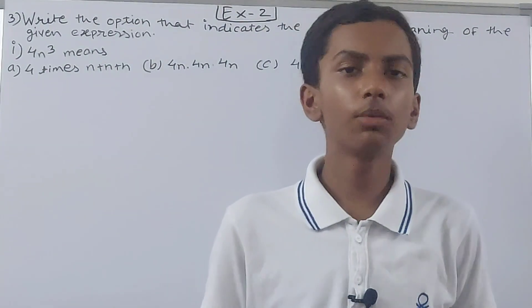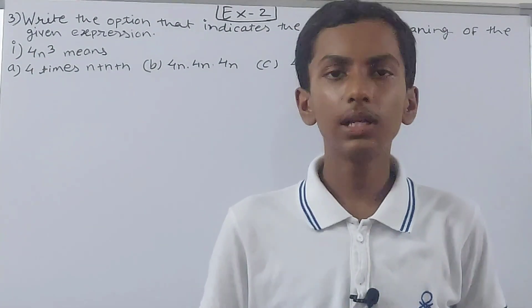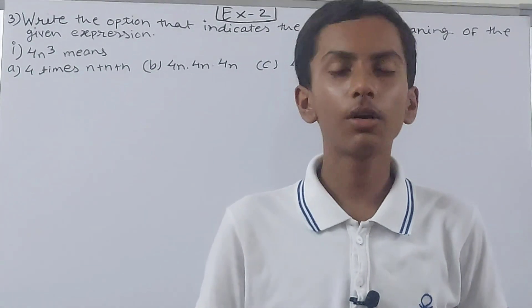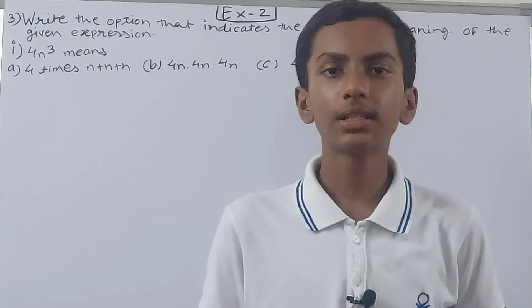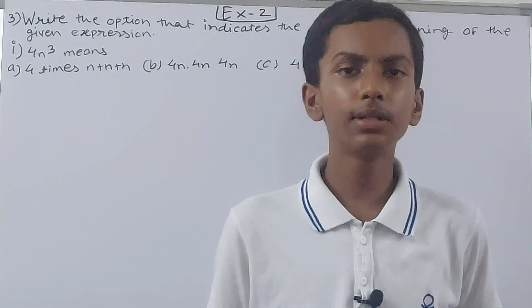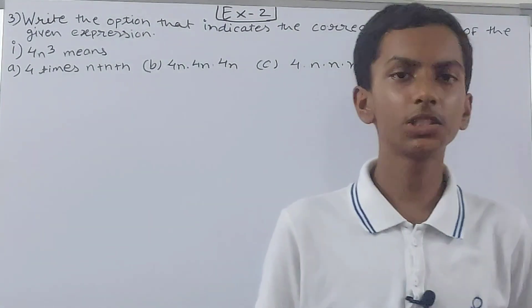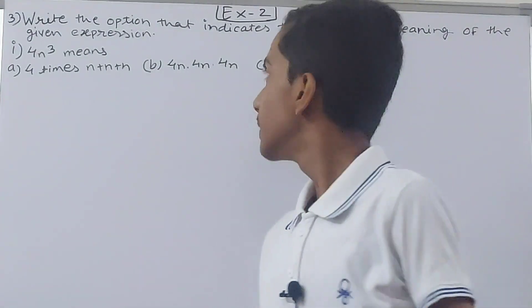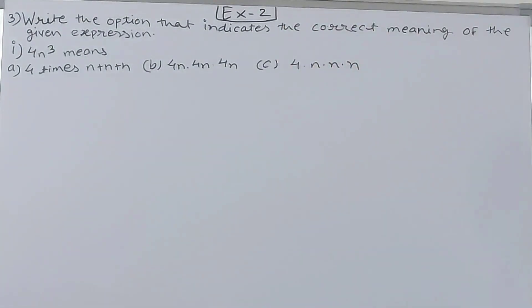Hello friends, welcome back to my YouTube channel 'Unlock Your Learning.' In this video we are going to solve ICC Mathematics Class 8, Chapter 2: Exponents, Exercise 2, Question Number 3. This question says: write the option that indicates the correct meaning of the given expression.